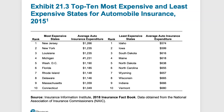The 10 most expensive states for auto insurance include New York and New Jersey at number one and two, with Connecticut rounding out the top 10. The least expensive states are North Carolina, North Dakota, South Dakota, Maine, Idaho at number one, Iowa at number two, Indiana, and Vermont — states with lower populations and lower accident rates. The average auto insurance expenditure in New York state is $1,235, but many people pay $2,000 or more depending on individual factors.